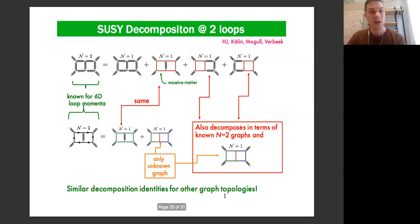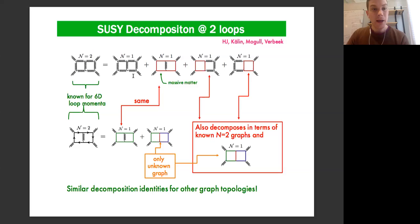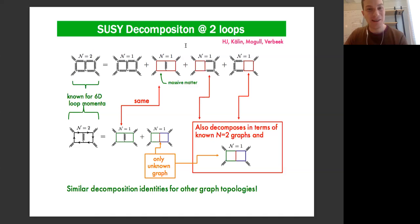We want to use these identities to look at two-loop numerators. I should also discuss the supersymmetric decomposition in more detail, as it's critical for the construction. Suppose we've computed the N equals two numerator for the N equals two super-Yang-Mills double box. We can try to express it in terms of N equals one building blocks: a pure vector contribution and matter contributions, which we can think of as being massive. Similarly, we can decompose the N equals two hypermultiplet into chiral multiplets with self-interactions. Interestingly, the same diagrams appear repeatedly.